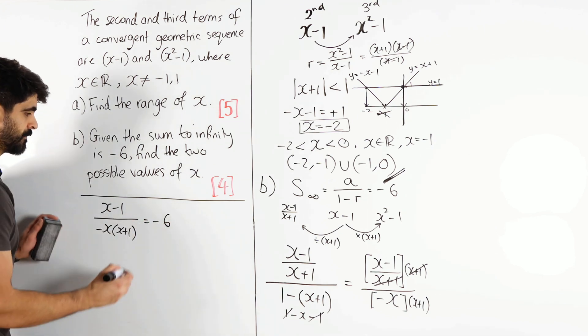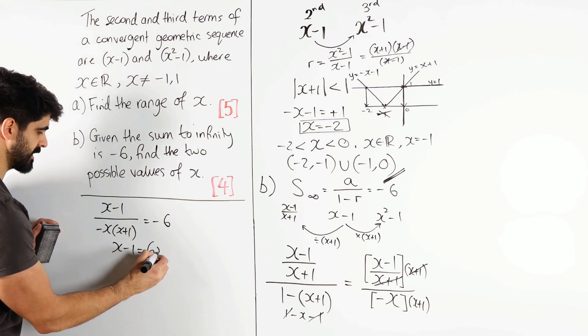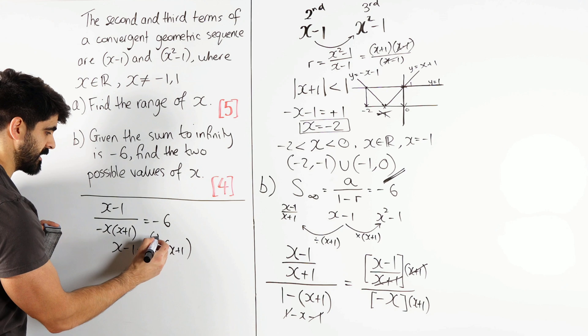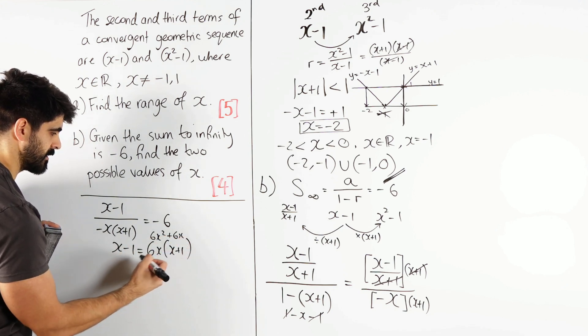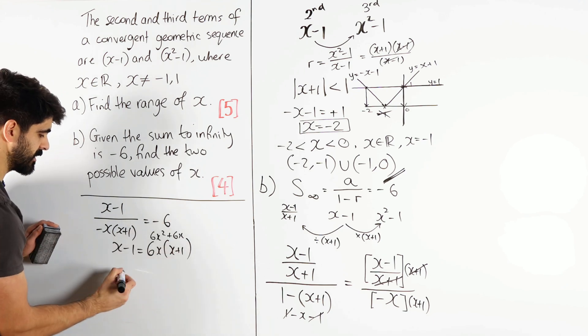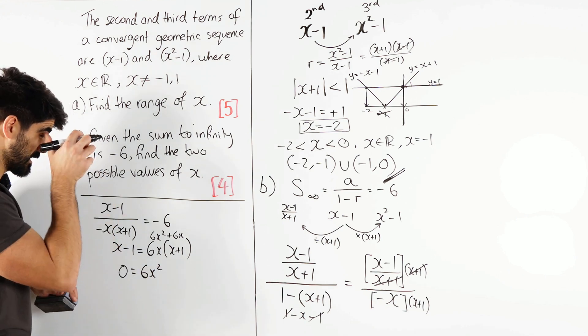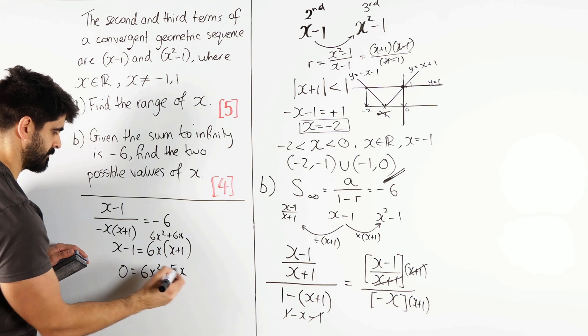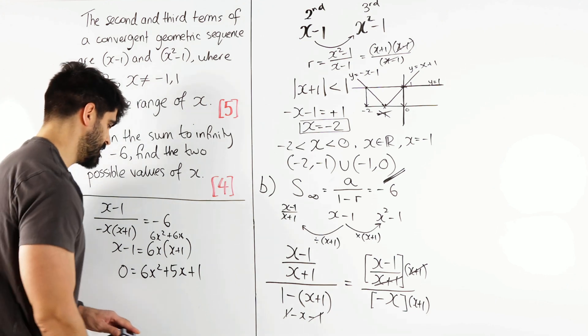Multiply through, so we get x minus 1 minus 6 times this is 6x, 6x plus 1. Expand, I'm going to do that here, 6x squared plus 6x, and we're going to move that to the other side. So we get 0 is 6x squared, we're doing 6x minus x, 5x, then we're going to add the 1 over.